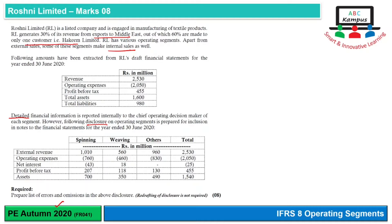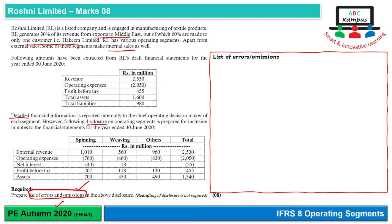Iska matlab hai ki sare relevant disclosures develop ho sakte hai. Humein repair list of errors and omissions in the above disclosure karna hai — redrafting of disclosure is not required. So we have to identify kya kya is ke andar errors or omissions hai.